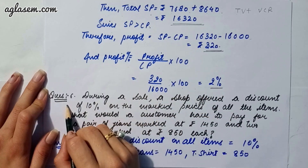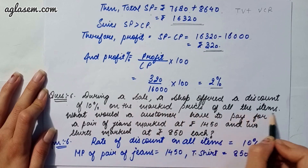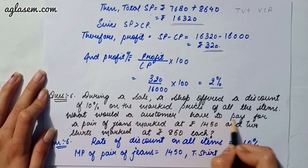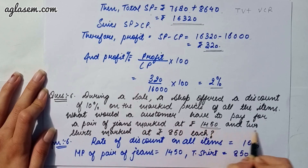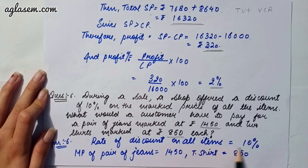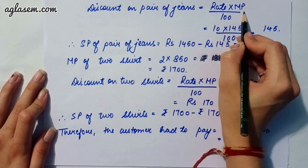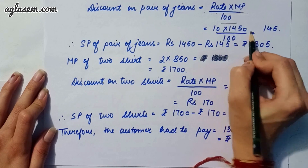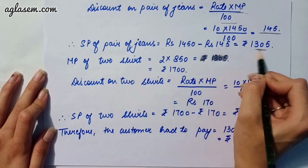Moving to our sixth question: during a sale, a shop offered a discount of 10 percent on the marked price of all items. What would a customer have to pay for a pair of jeans marked at rupees 1450 and two shirts marked at rupees 850 each? Rate of discount is 10 percent. Discount on pair of jeans is 10 into 1450 divided by 100, giving rupees 145. Selling price of jeans is 1450 minus 145, that is 1305.